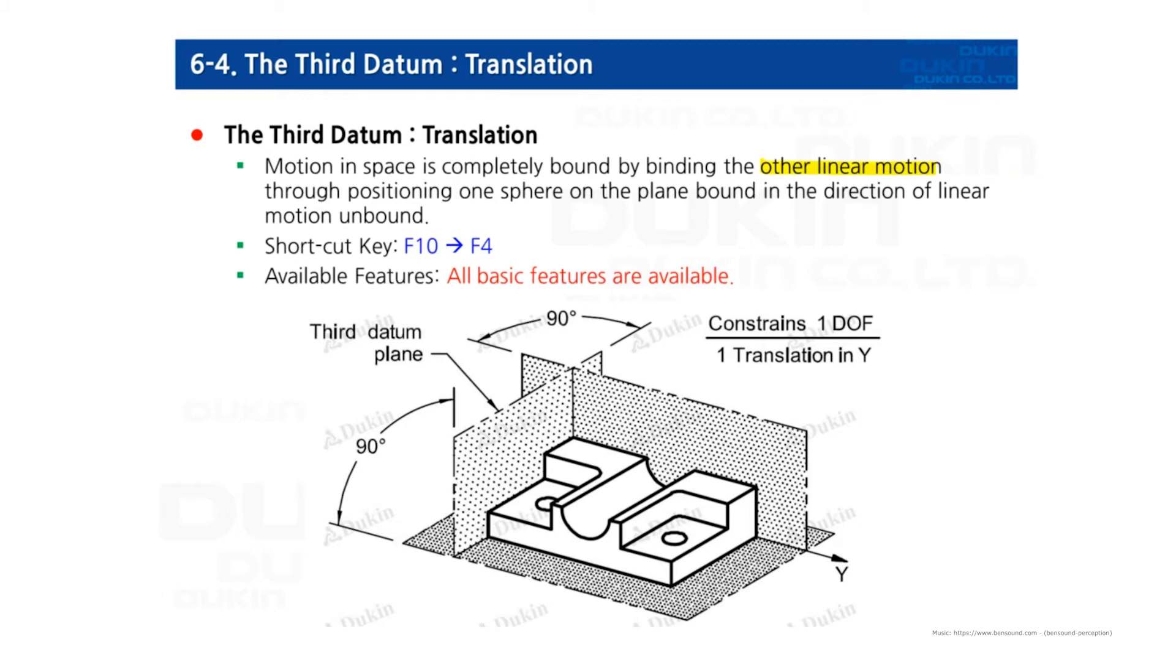By the meaning of constraining linear motion is, it only requires x, y, and z coordinates. Therefore, all basic features are available for translation.